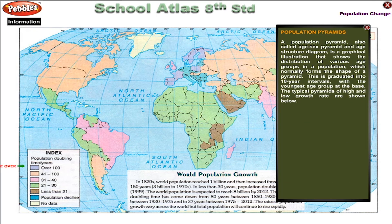A population pyramid, also called an age-sex pyramid or age structure diagram, is a graphical illustration that shows the distribution of various age groups in a population, which normally forms the shape of a pyramid. It is graduated into 10-year intervals with the youngest age group at the base. Typical pyramids of high and low growth rates are shown below.